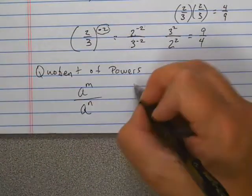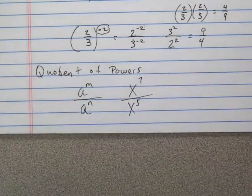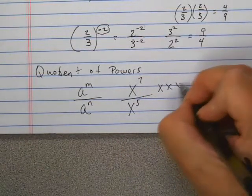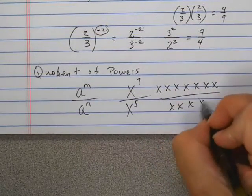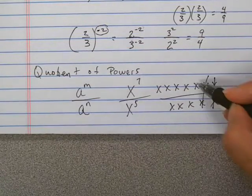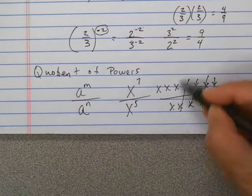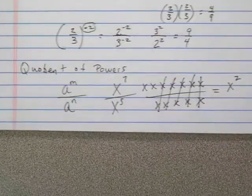So this would be like having x to the seventh over x to the fifth. This is seven x's. This is five x's. So anytime you have something in the numerator and in the denominator that's the same, they will cancel out. So this will end up just being x squared in the numerator.